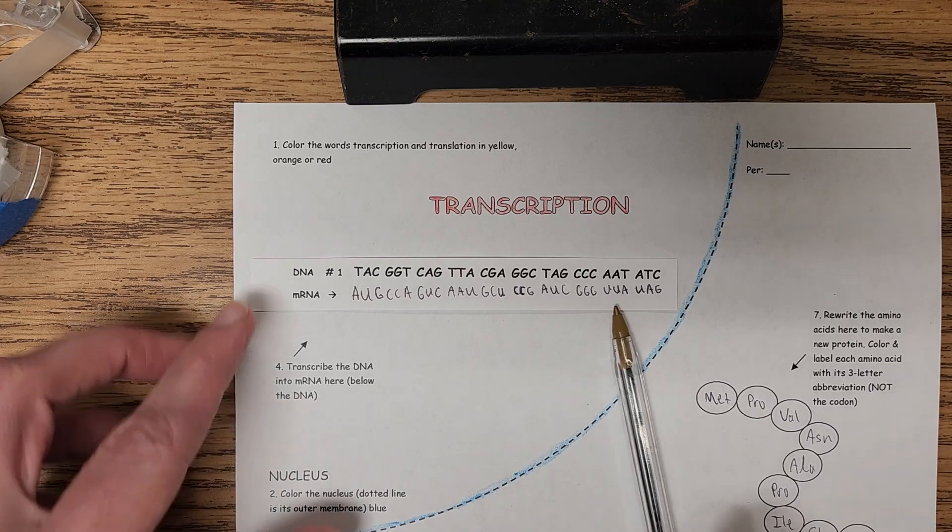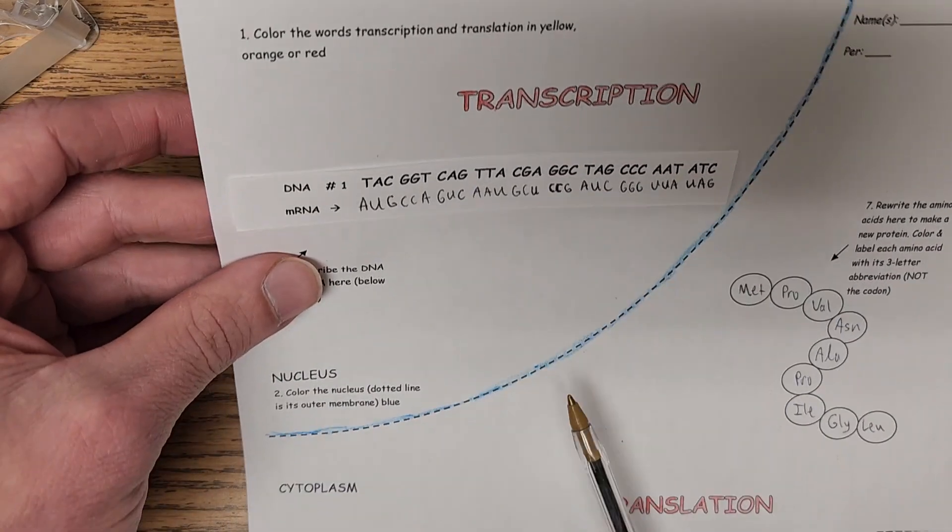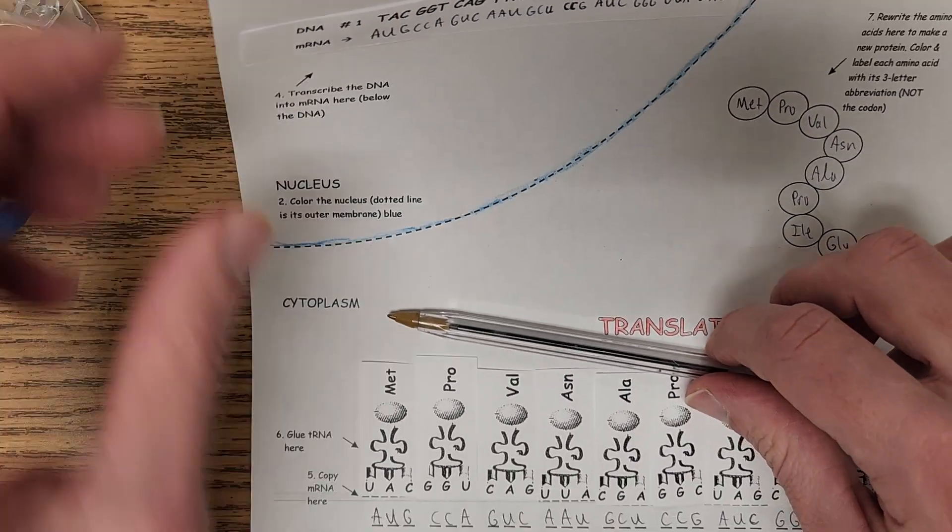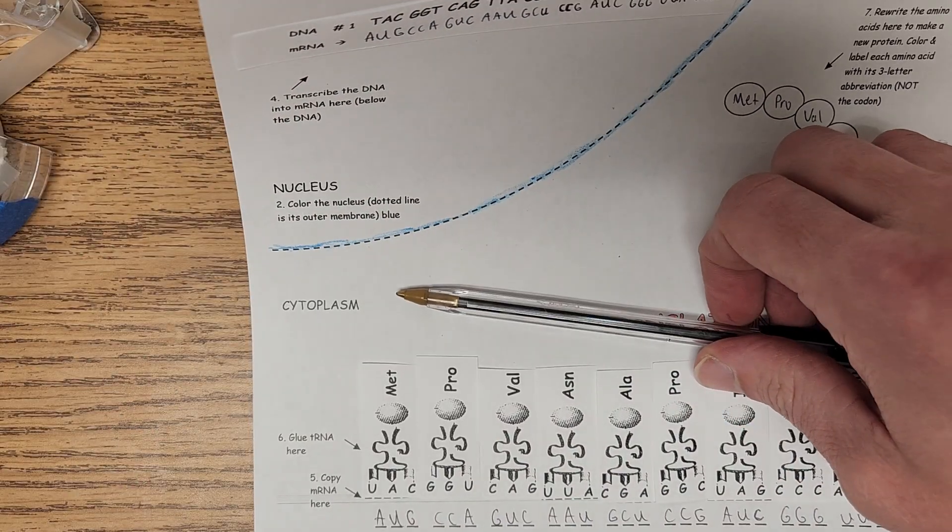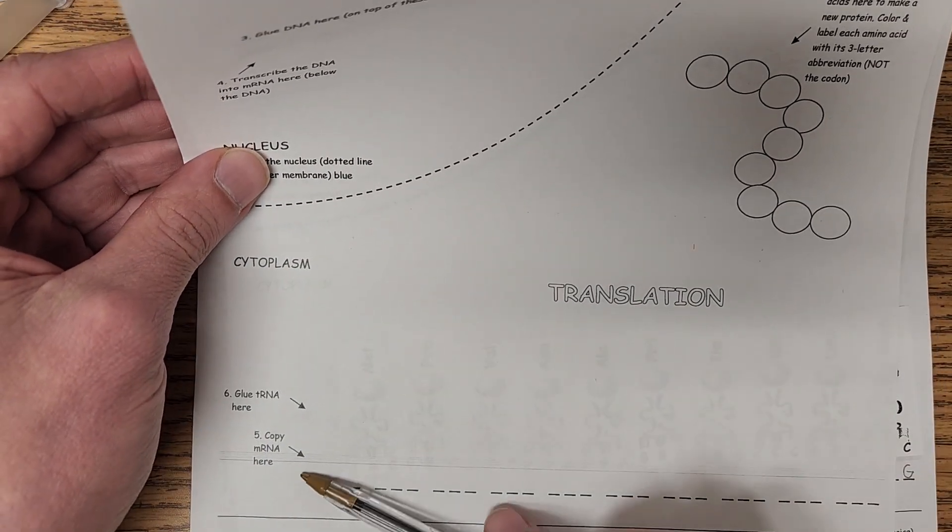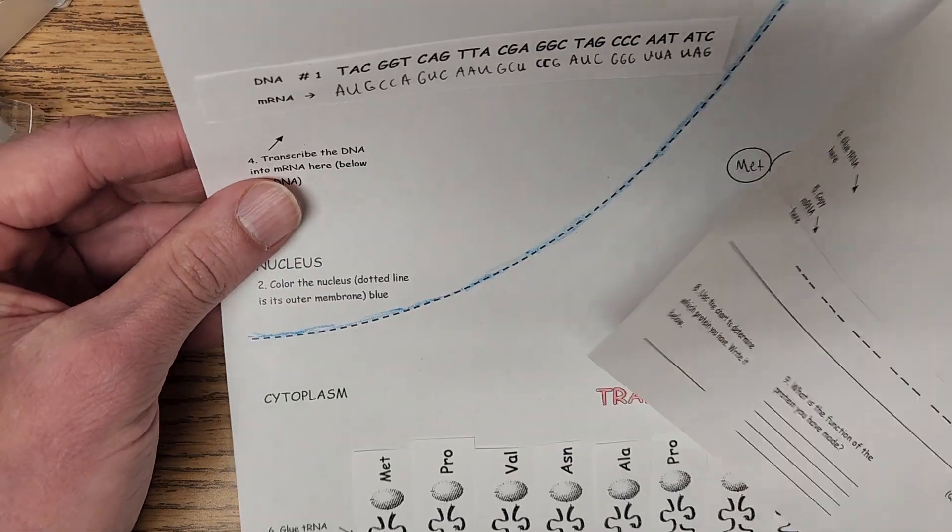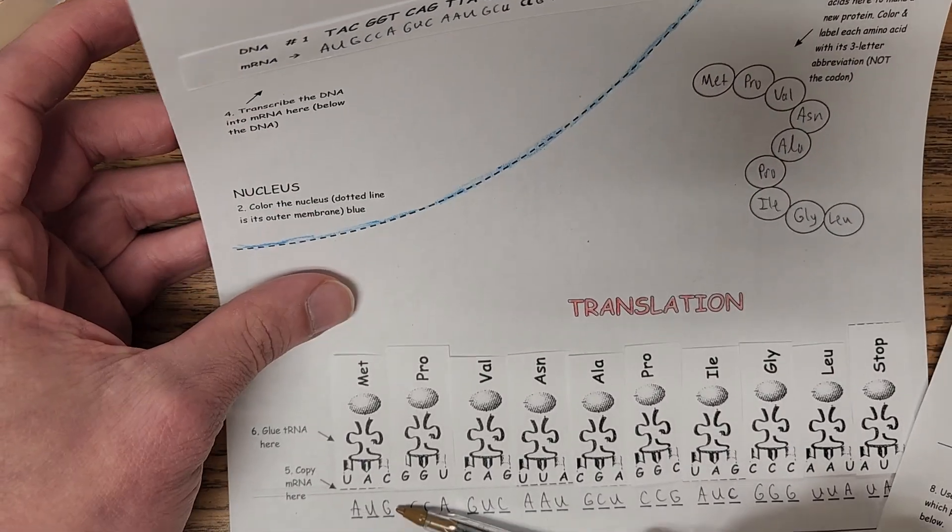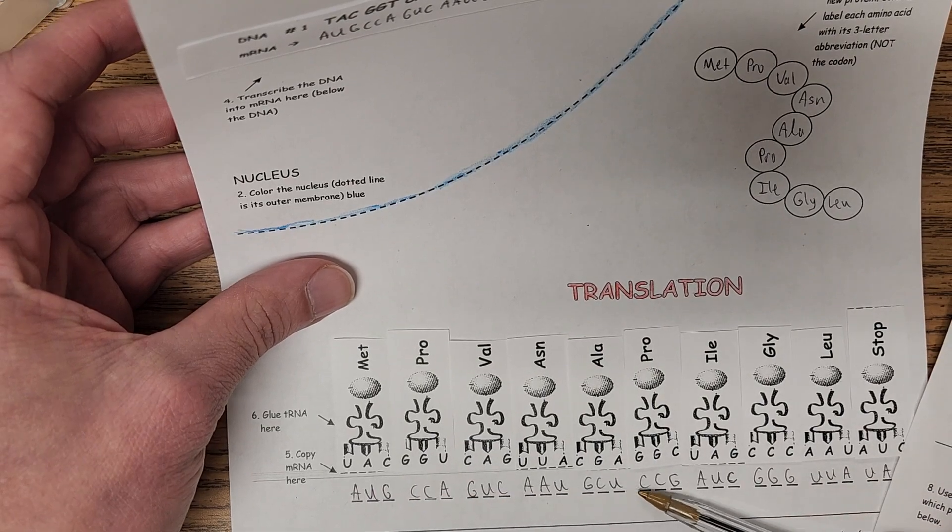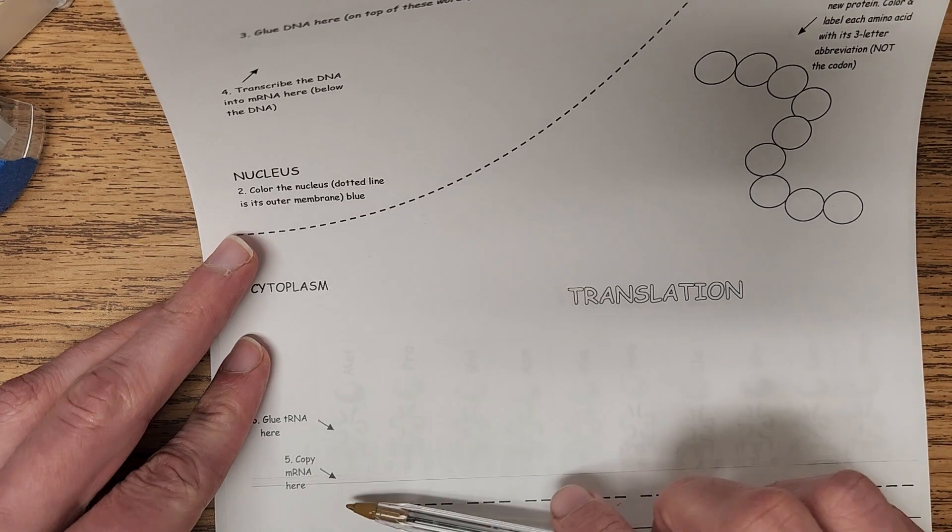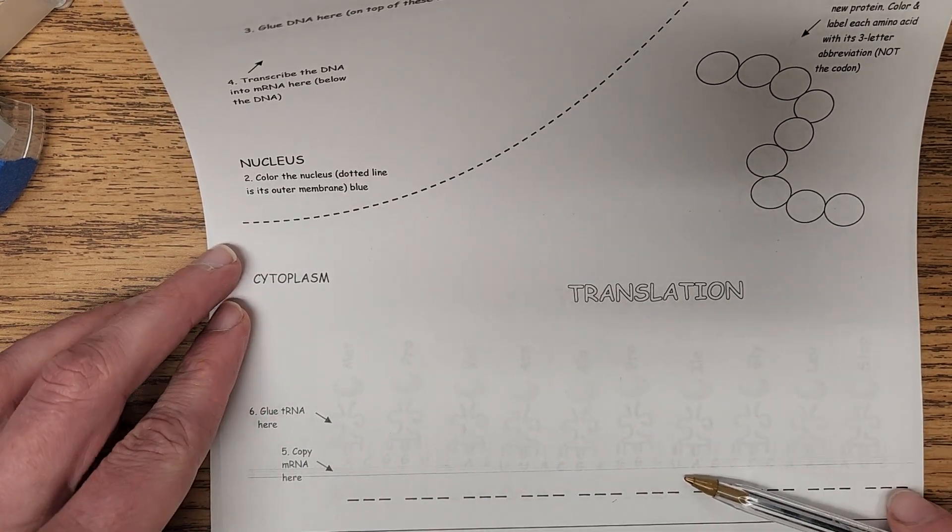You then need to find direction number five, which is down here. You're seeing the part that's after it's done. Before it was done, it looked like this. And you need to copy the mRNA here. In other words, whatever is here, you write these exact same things here. That was direction five, so on your blank paper first, it's going to look like you're just rewriting whatever's up there down here.